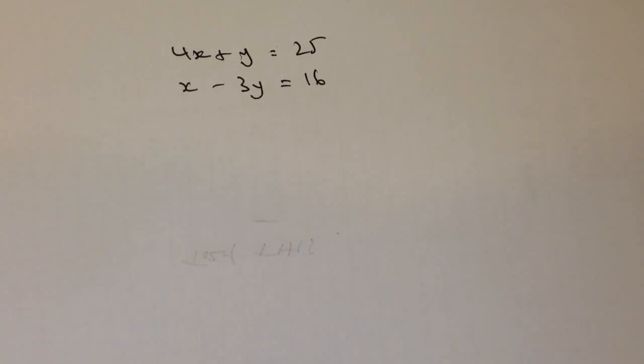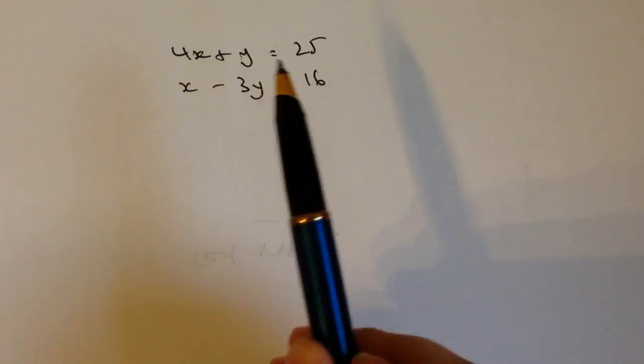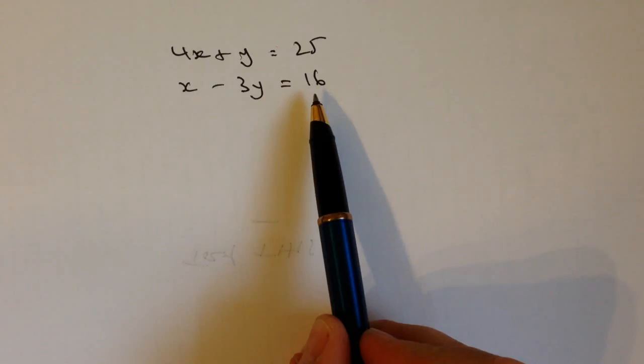Hi, so this is just a response to the comment that you put on the video here. I just thought I'd try this particular method of solving it. I hope it's going to be helpful to you. Okay, so I've got 4x plus y equals 25. I've also got x minus 3y equals 16.